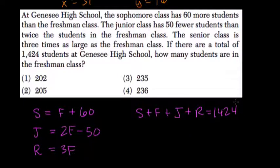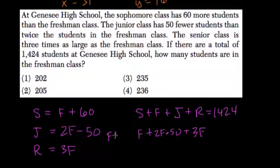So if R equals 3F, I can plug this into this formula. So instead of R, I have 3F. And J is equal to 2F minus 50, so instead of J, I can write 2F minus 50 plus 3F. F, we want to leave it as F. We get one variable. And this sophomore class equals F plus 60, so instead of S, I get F plus 60.